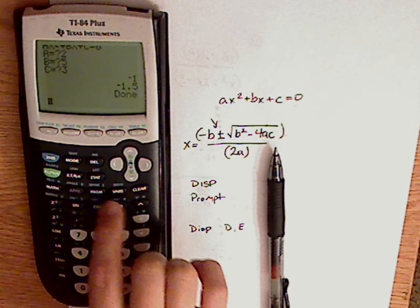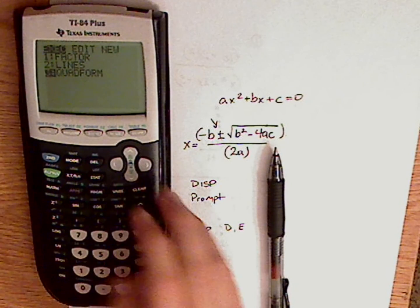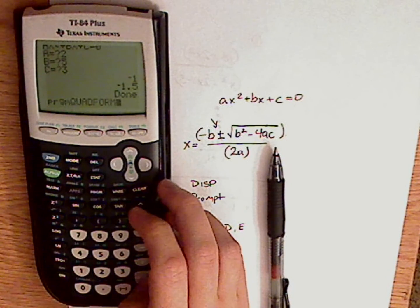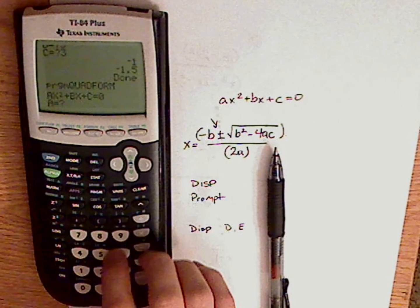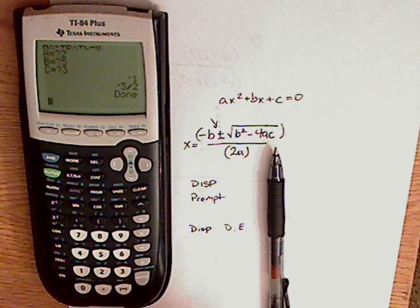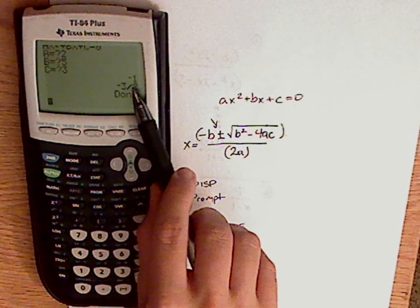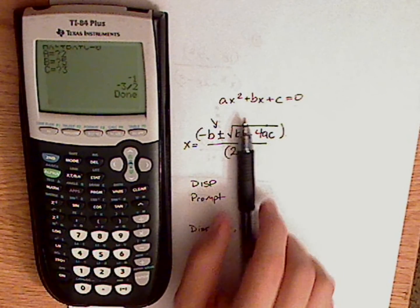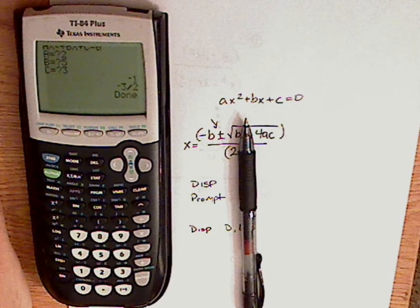Now I'm going to type in the same thing again. I have my A being 2, 2, 5, 3. So program, 2, 5, 3. There we go. And so my solutions are negative 1 and negative 3 halves. And that's it.